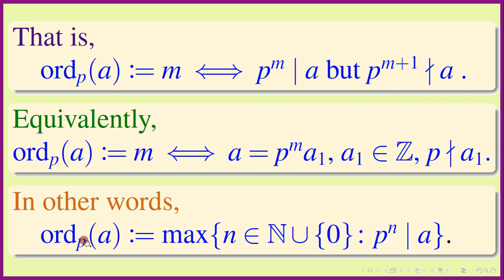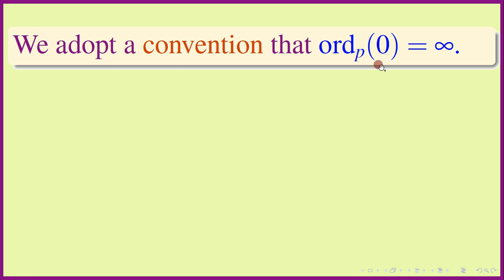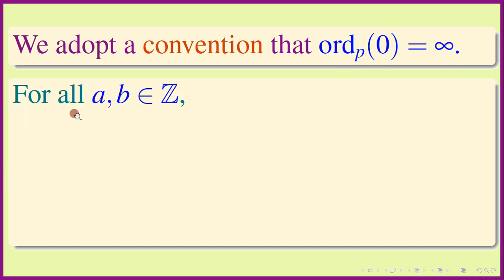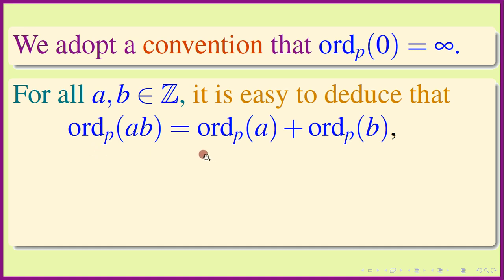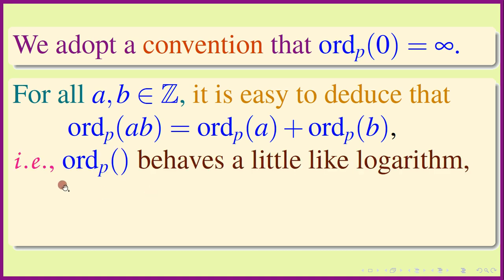In other words, the p-adic valuation is the maximum of all non-negative integers n such that p^n divides a. We adopt the convention that the p-adic valuation of 0 is infinity. For all integers a and b, it is easy to deduce that the p-adic valuation of the product ab equals the p-adic valuation of a plus the p-adic valuation of b — that is, p-adic valuation behaves a little like a logarithm.